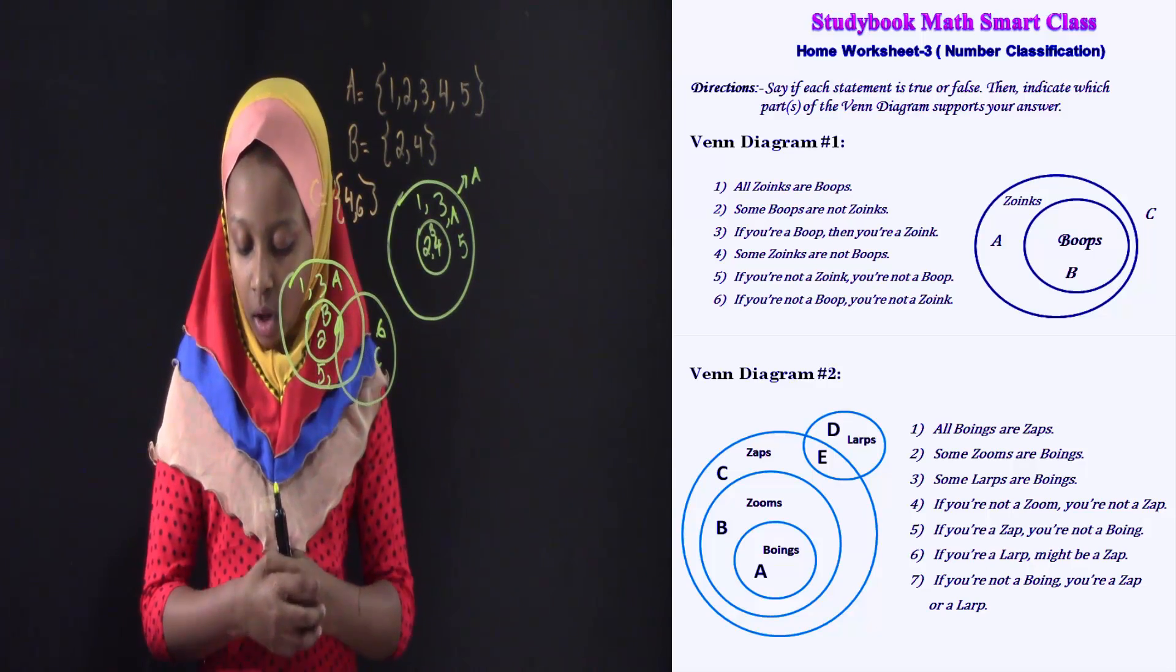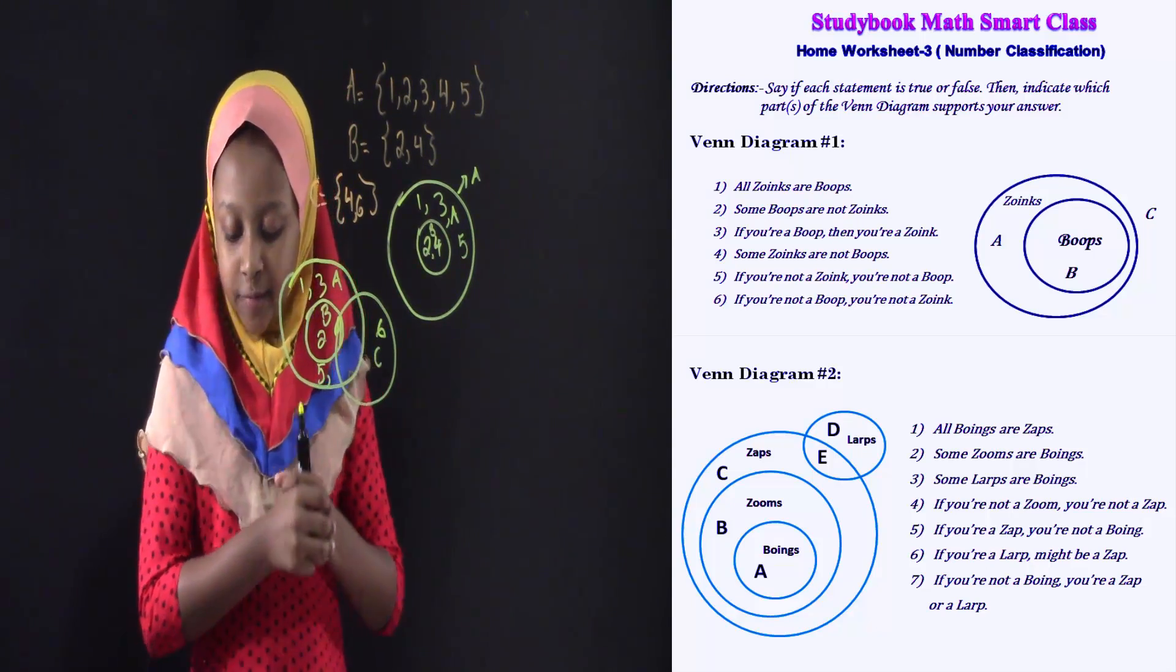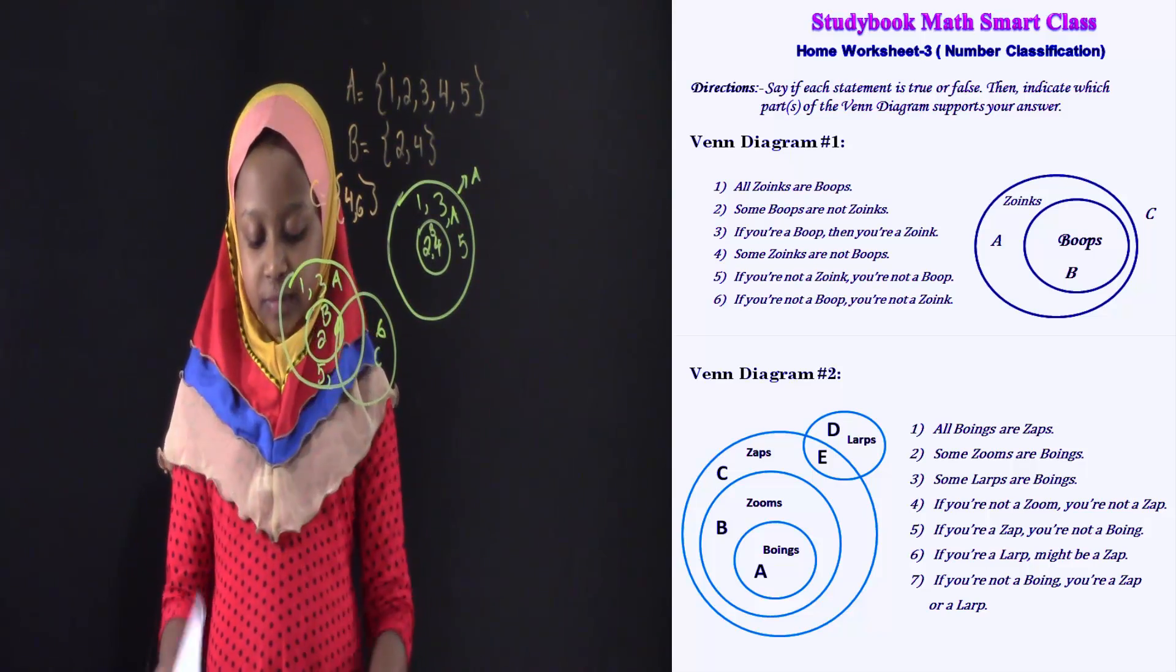For all zoinks are boinds, all boinds are zaps. You have to find out if it's true or false. I explained it here, now you have to find out.